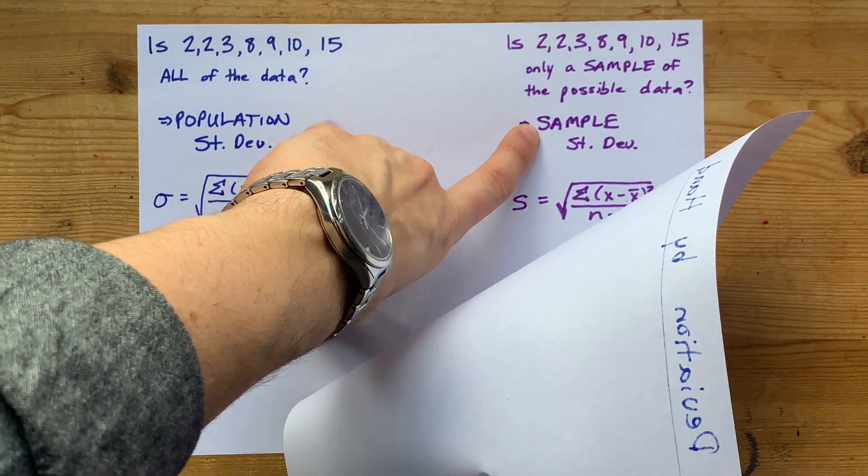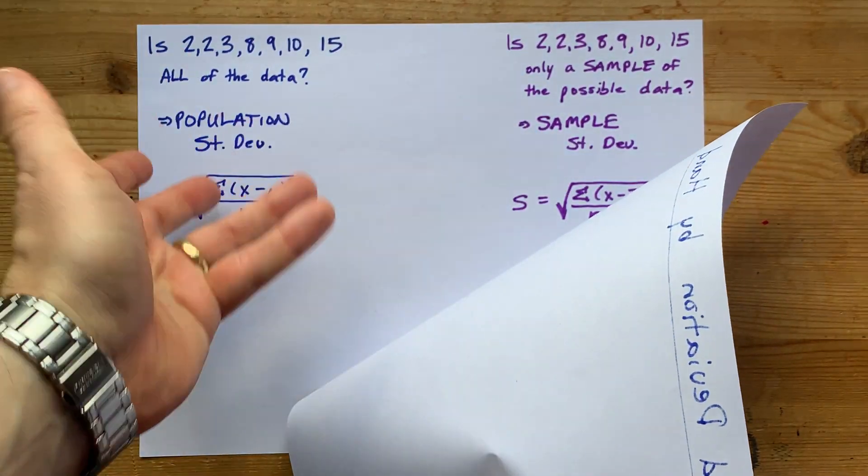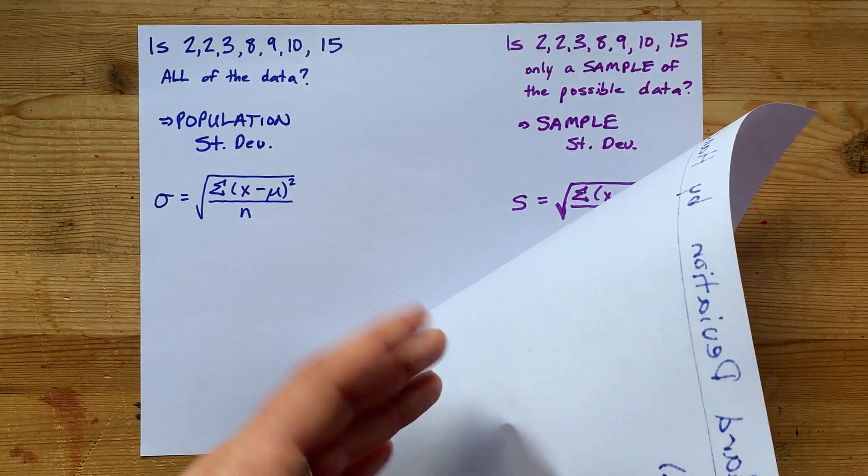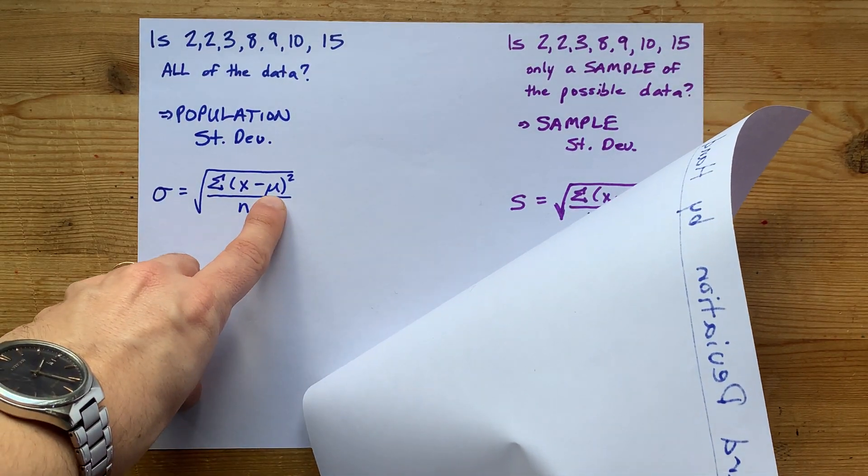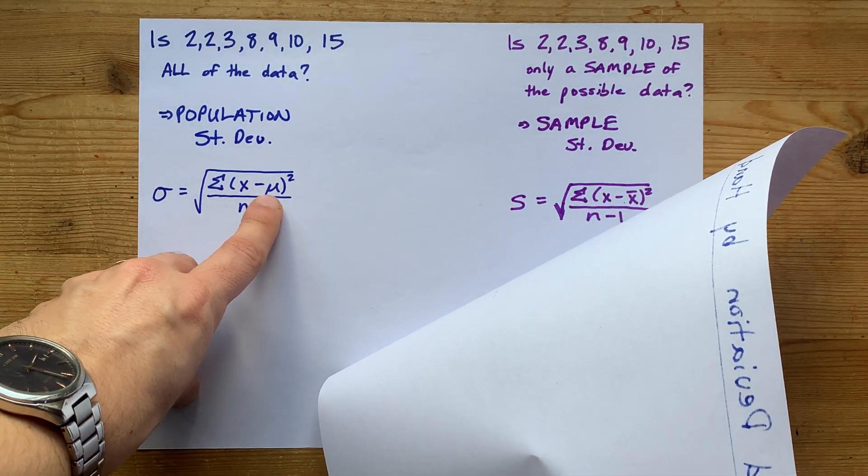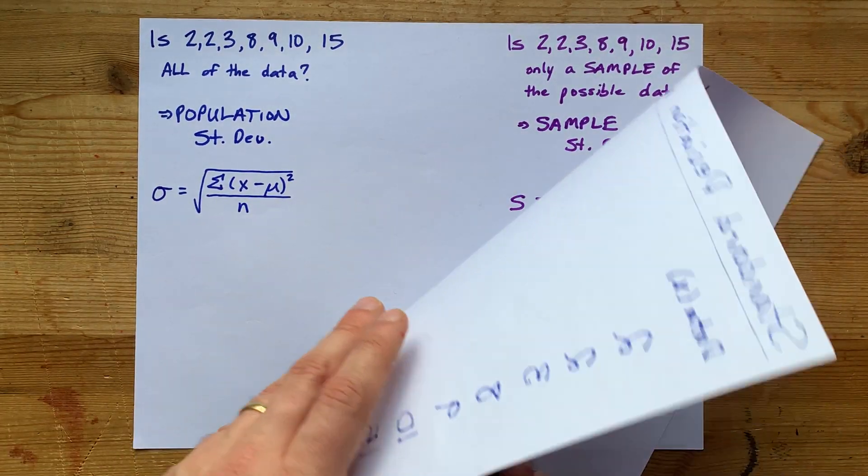Meaning that there are other numbers but these are just the ones that were randomly selected for you to use. You'll have to know if it's a population or a sample before you start because you're going to be subtracting the average, and the average has a different symbol depending on whether it's a population or a sample.